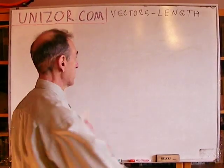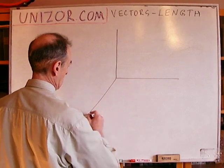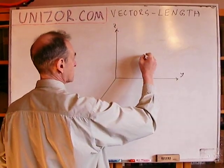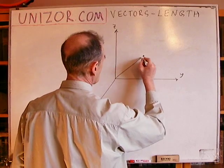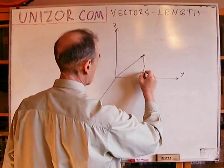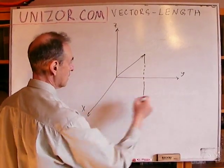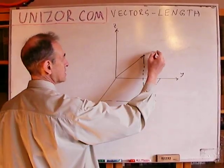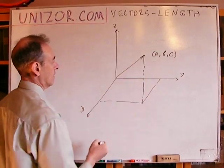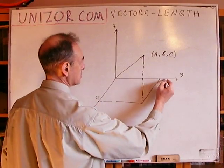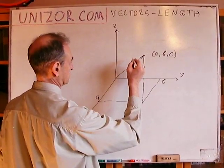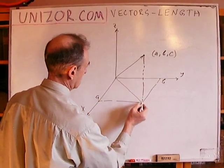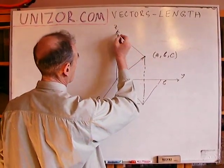Now, the vector in three-dimensional space. This is x, this is y, this is z. This is our point where the vector ends. If this point is (a, b, c), then this coordinate is a, this is b, and this is c.